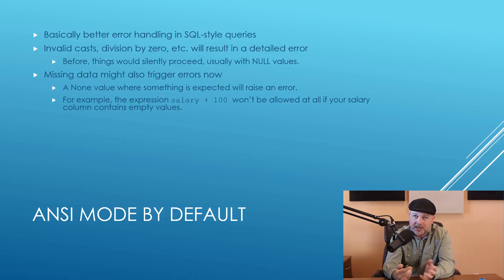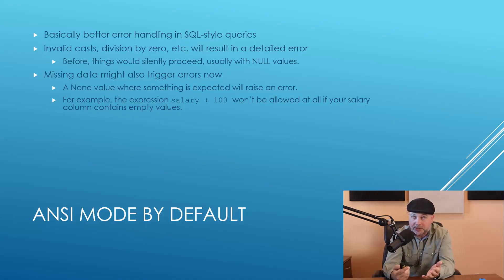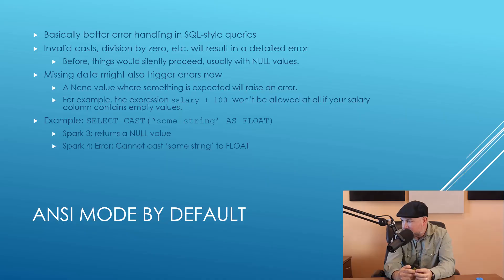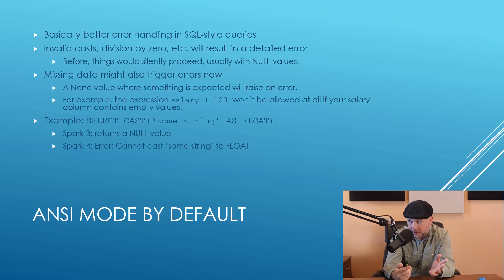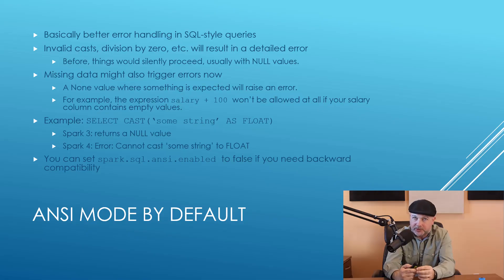Missing data can also trigger errors now. For example, if you have a SQL operation in Apache Spark that adds 100 to a column where you assume there's a number, but there's missing data — in Spark 3, that was fine, it would just give you a null result. In Spark 4, it will throw an error. To make that concrete: if you do a SELECT CAST of some string as float, which is obviously invalid, Spark 3 would return null and proceed. Spark 4 will throw an error saying it can't cast a string to a float. If you need backward compatibility, you can set spark.sql.ansi.enabled to false to disable ANSI compliance.